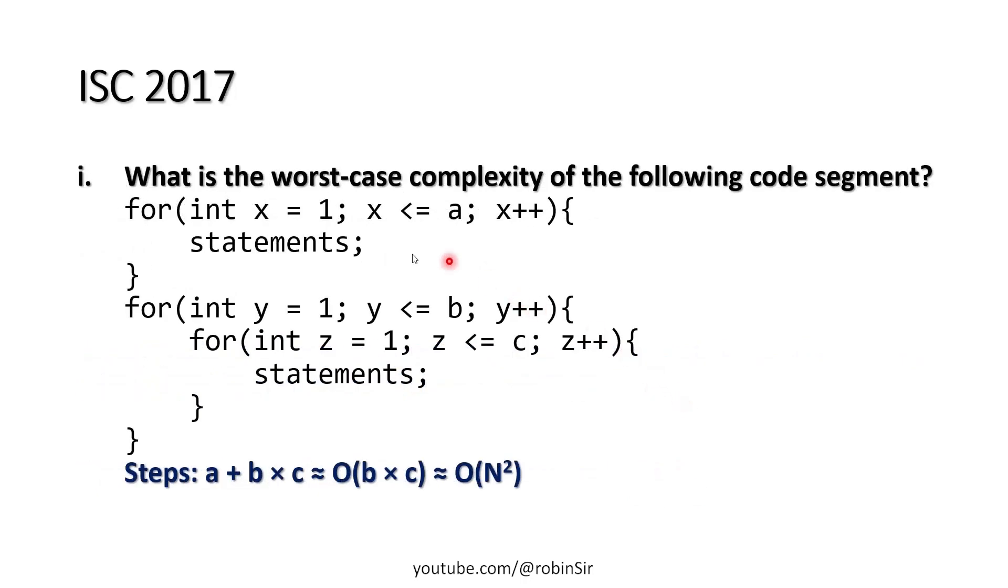In the year 2017 one question came. What is the worst case complexity of the following code segment? Here also we have two separate loops. In the first loop we can clearly see the loop is running A times, whereas the second one is a nested loop. In the outer loop the loop is running B times, whereas the inner loop is running C times. So the number of steps would be A plus B into C, which is roughly Big O of B into C. And that's why I would say that this is quadratic in nature, N squared.